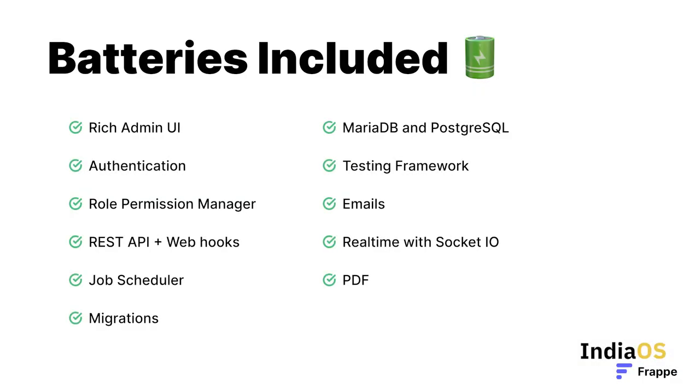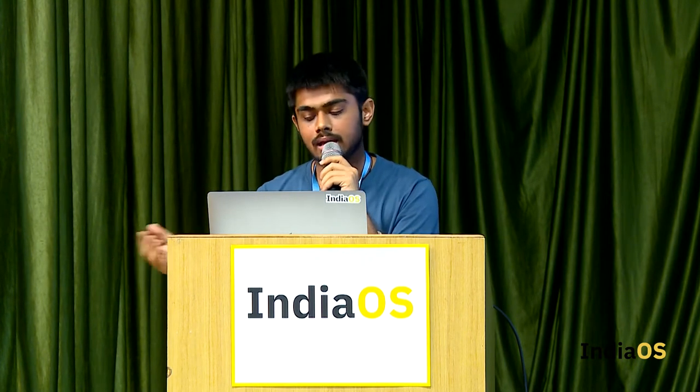One of the most amazing things about Frappe is that it is a batteries-included framework. Just like Python being a batteries-included language, it extends that philosophy. Apart from the standard things you'd expect from a framework — like Django's ORM, Migration Manager, REST endpoints — we have role permission manager, emails, real-time communication with Socket.io, Job Scheduler, payment gateways, and native integration to AWS, Dropbox, Slack, and a lot more.